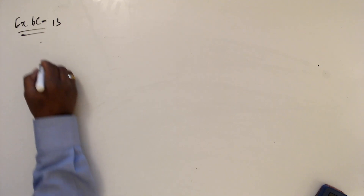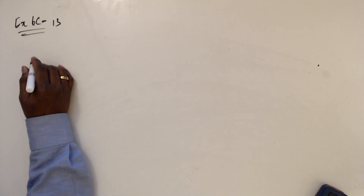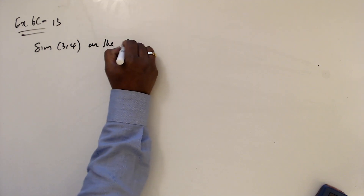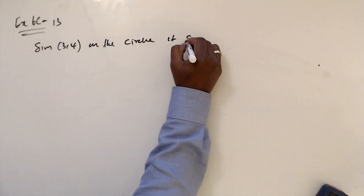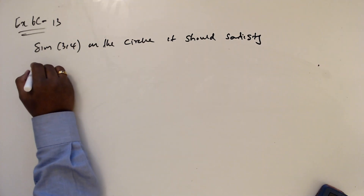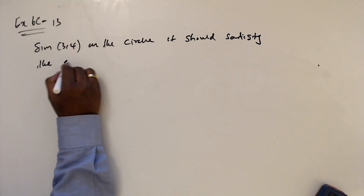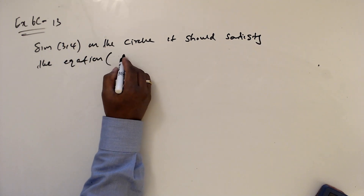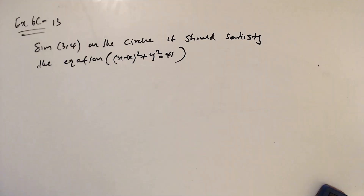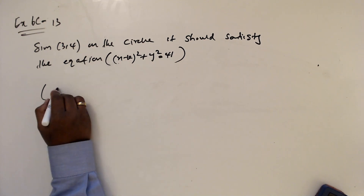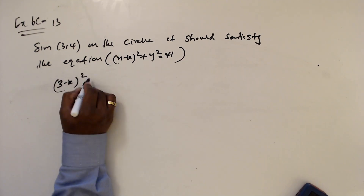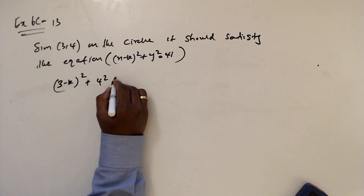Question number 13. Since the point 3, 4 is on the circle, it must satisfy the equation x minus k squared plus y squared equals 41. Substituting: 3 minus k squared plus 4 squared equals 41.